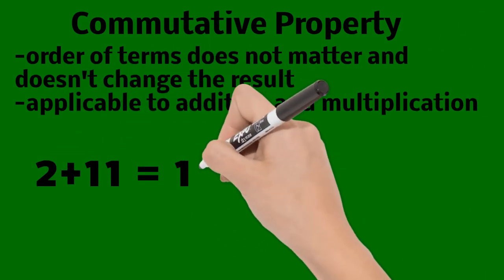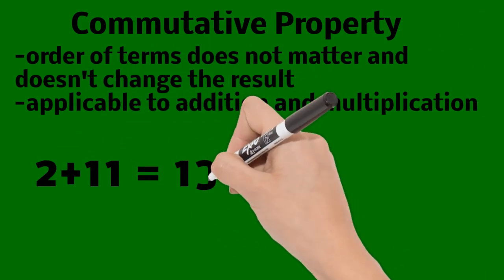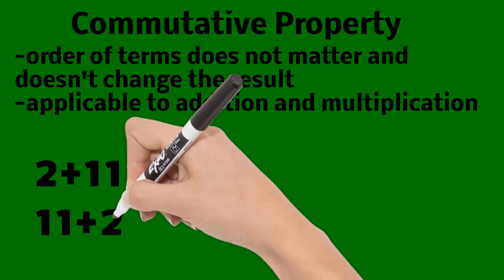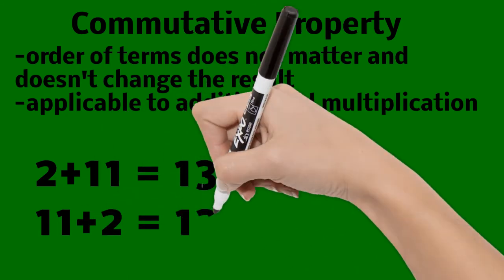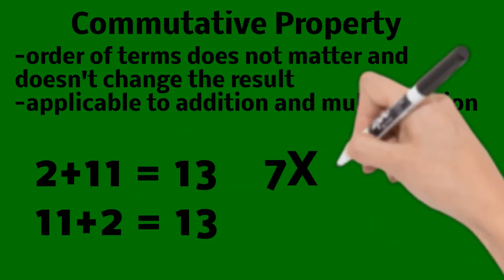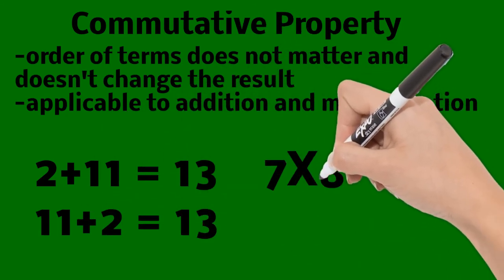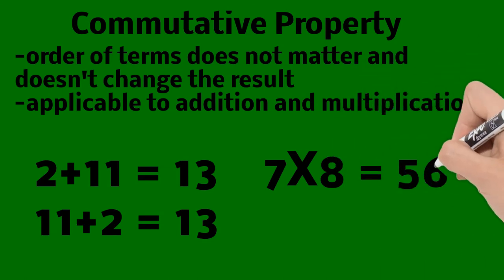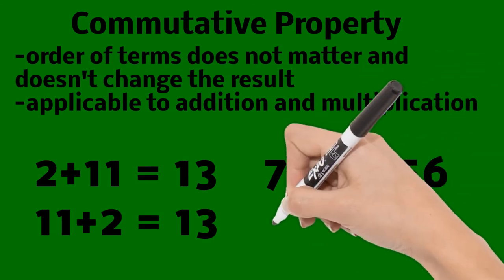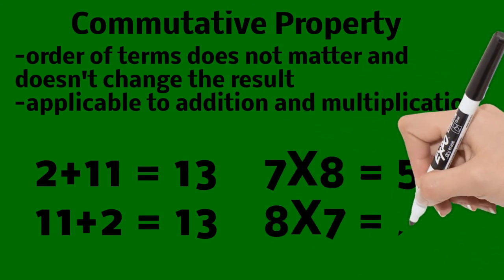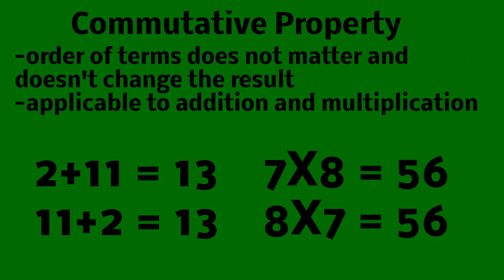For example, 2 plus 11 equals 13, and 11 plus 2 is equal to 13. For multiplication, 7 times 8 is equal to 56, and 8 times 7 is also 56.